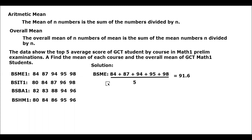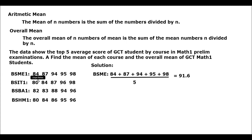So the mean is simply 84 plus 87 plus 94 plus 95 plus 98, the sum of the numbers divided by n. So n is 5 since we have 5 data — 5 prelim examination scores. So the sum divided by 5, and the answer is 91.6. That is the arithmetic mean for BSME top 5 average score in the prelim examination.